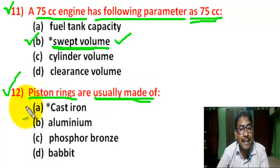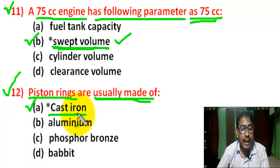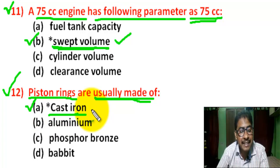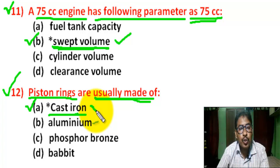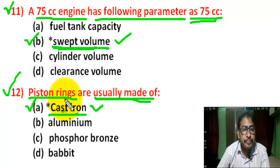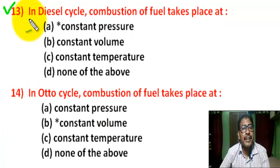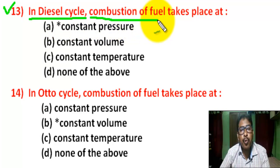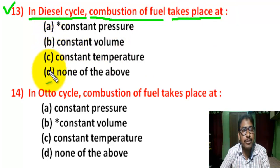Question number 12: There are four options. Correct answer is A — cast iron. Cast iron possesses excellent heat and wear resistance properties, so cast iron is used for piston rings.